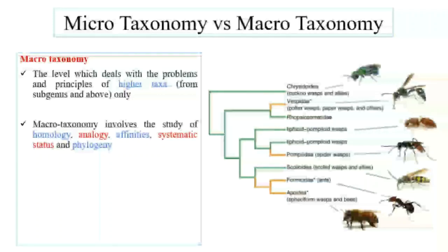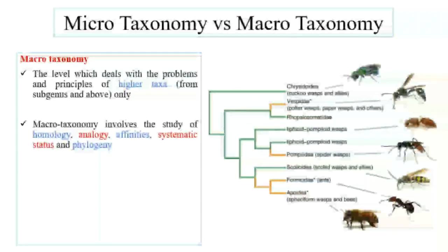In Macrotaxonomy, we study homology, analogies, systematic status, species affinities, and phylogeny — the phylogenetic relationships among groups.